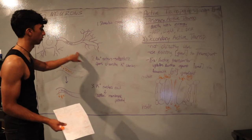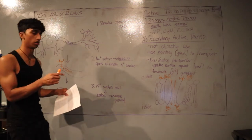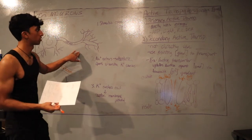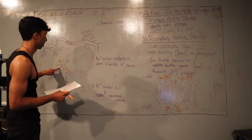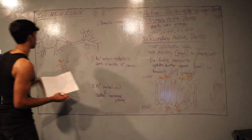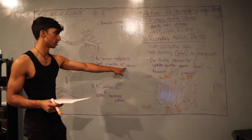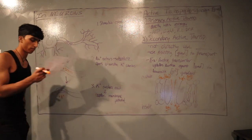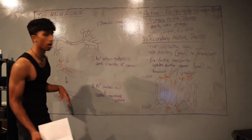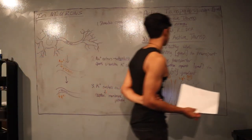In a neuron, a stimulus causes sodium channels to open and sodium enters, depolarizing the neuron from −70 mV to about +50 mV. This also opens voltage-sensitive potassium carriers. Potassium then rushes out, repolarizing the membrane back to about −70 mV. This is a quick overview of how an action potential is triggered and resolved.